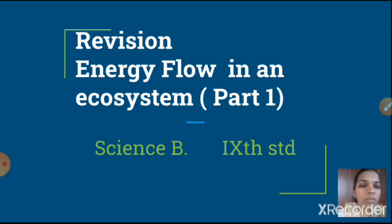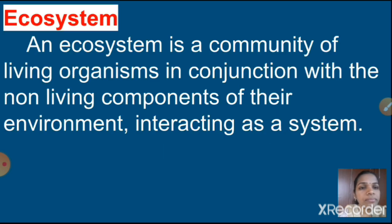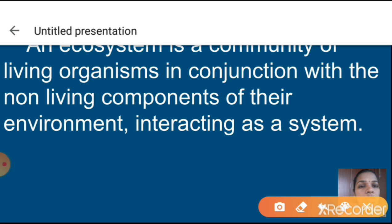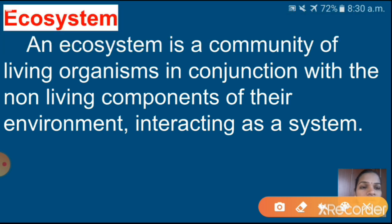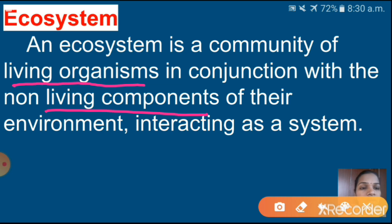We will see one by one what is meant by ecosystem. An ecosystem is the community of living organisms in conjunction with the non-living components of their environment interacting as a system. So ecosystem means both are interconnected — living things and non-living components.